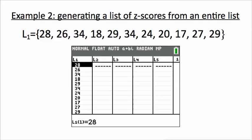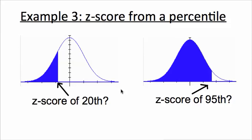Moving on to example 3. You are given a percentile — say, the 20th percentile — and you want to find the corresponding z-score. Likewise, you might be given the 95th percentile and need its z-score. Do you need a table to do a reverse lookup? No — just use this program.